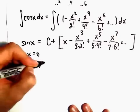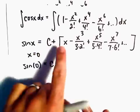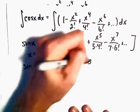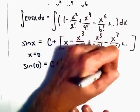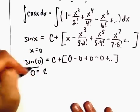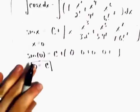we'll get sine of 0 equals c plus, well, we're plugging in 0s for all the x's, so those would all just be 0s. But sine of 0, we know that is 0. So in this case our c value is just going to be 0.